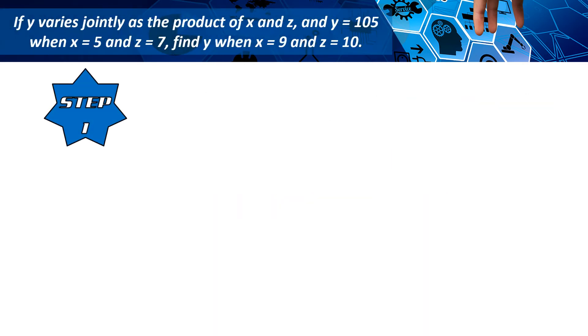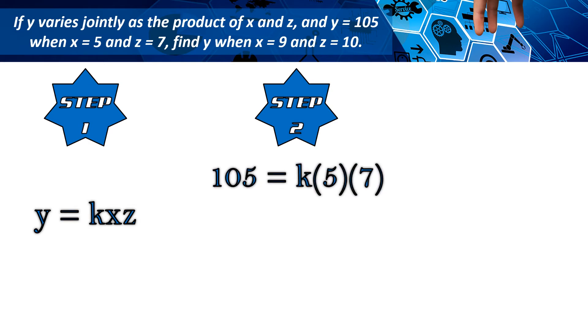Kagaya ng direct variation at inverse variation, meron tayong three steps. Yun nga ang una, ay express as equation of variation. Dahil y varies jointly as k x and z, kaya yan ang nakalagay.